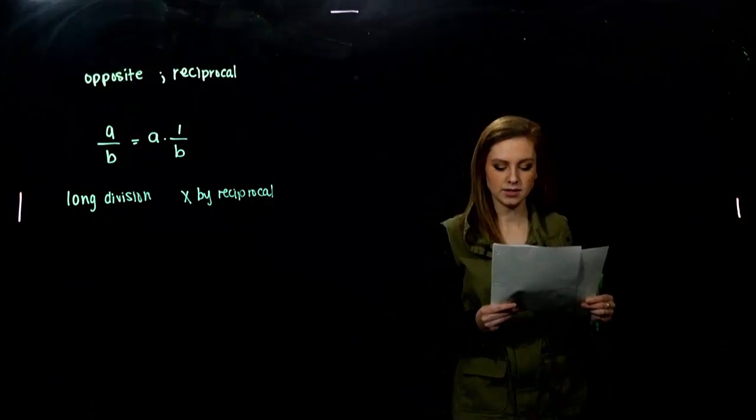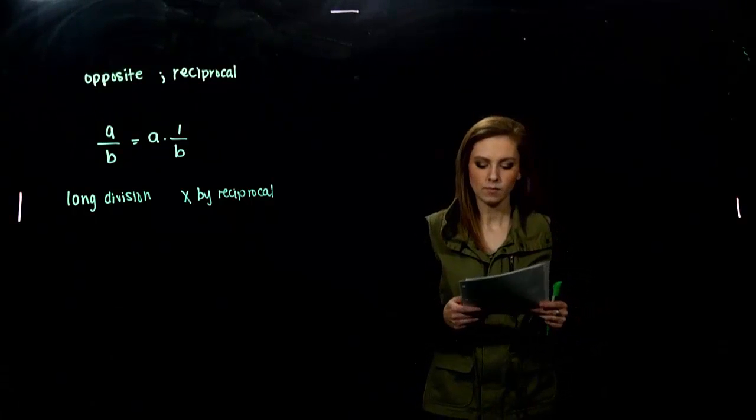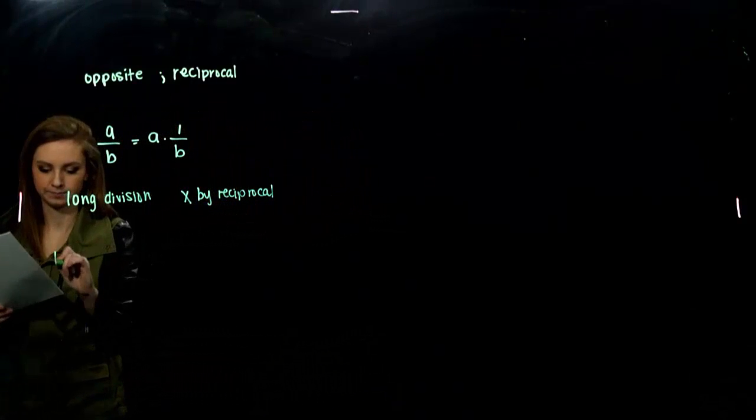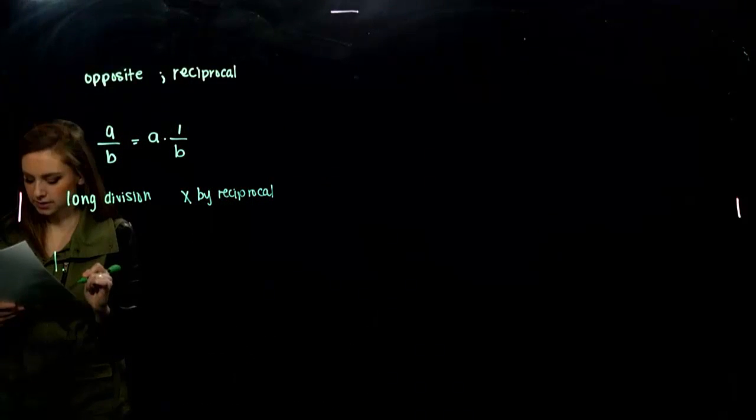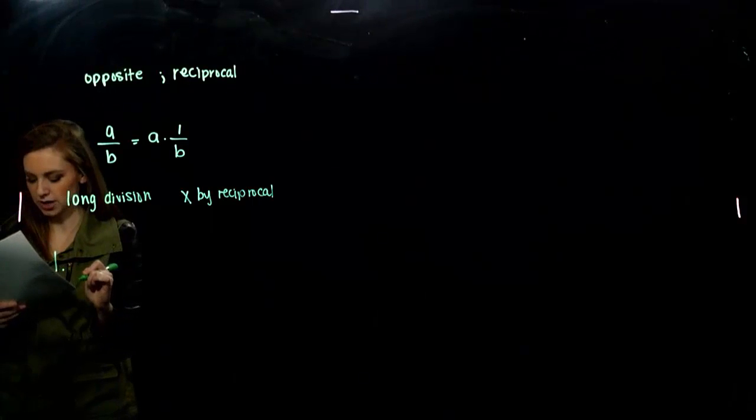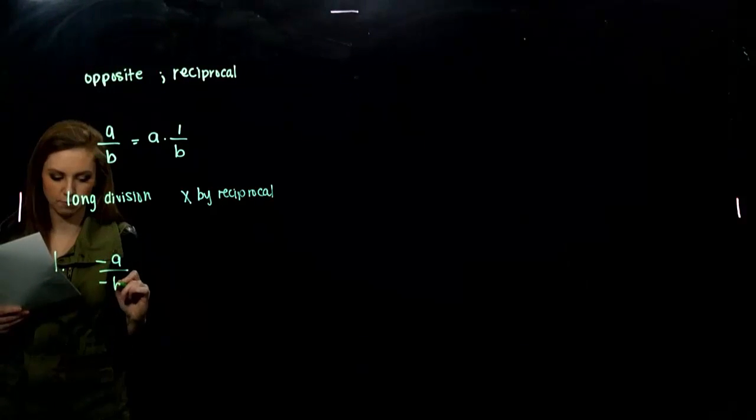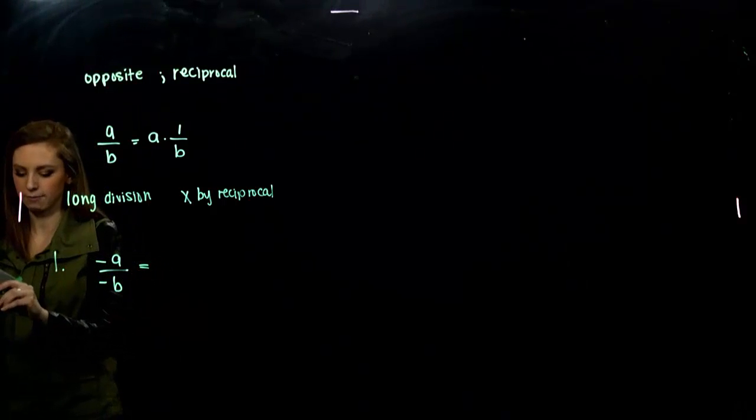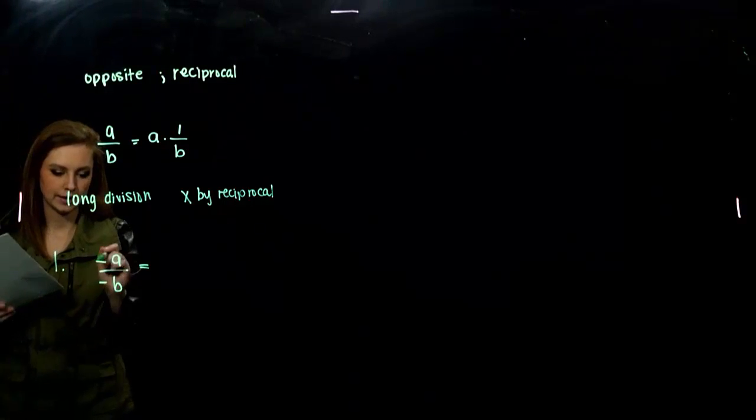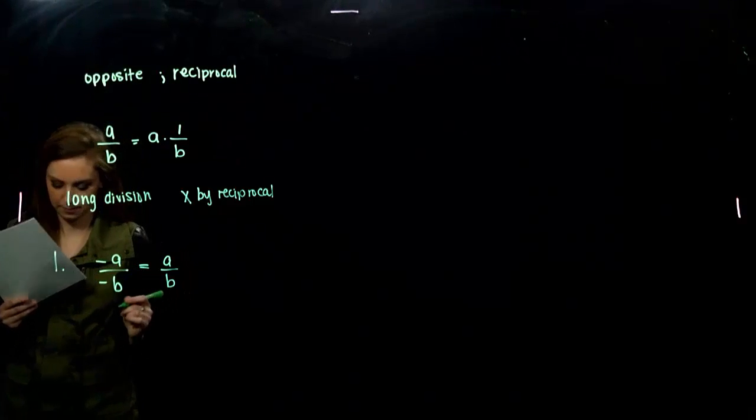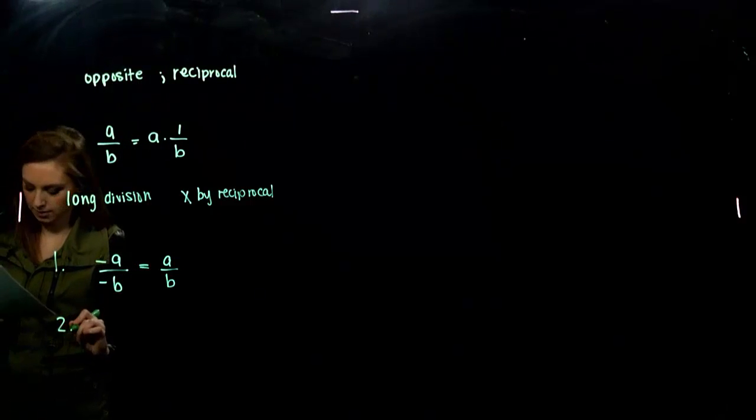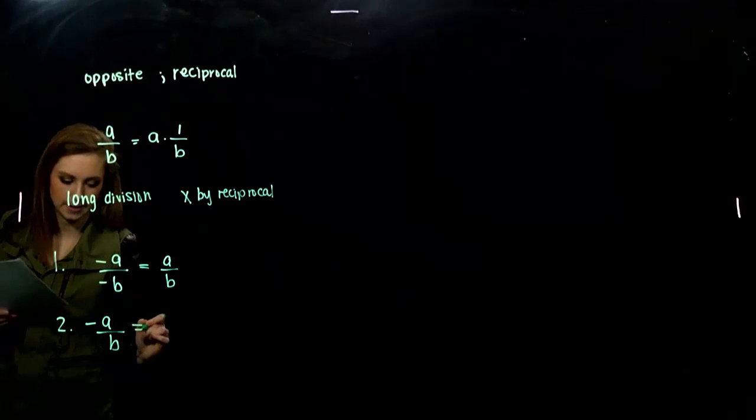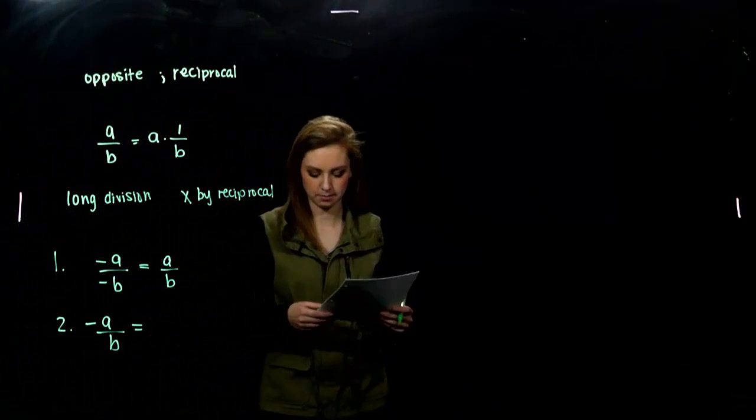So, we've discussed briefly how we can assign a negative in a number. So, looking in that box, sign changes in fraction notation. Negative a over negative b is equivalent to what? How can I rewrite that form in a different way? Negative divided by negative gives me a positive. And then, what about for number 2? If I have negative a over positive b, how else could I rewrite that number?